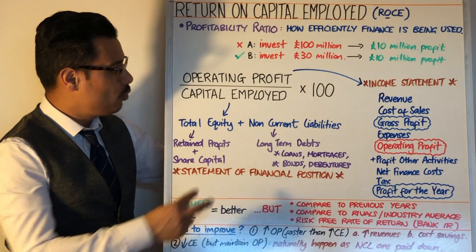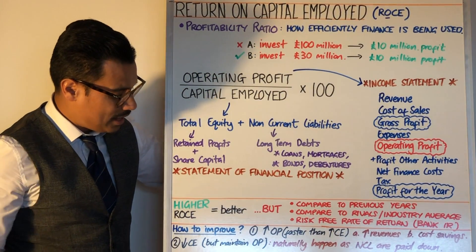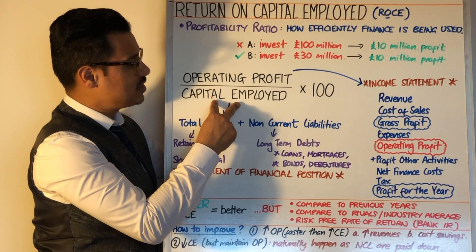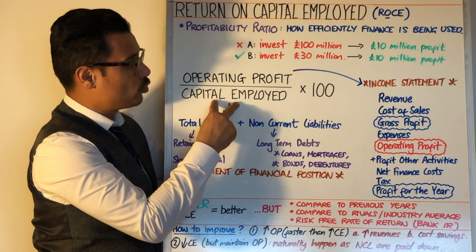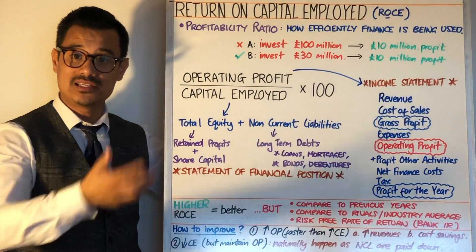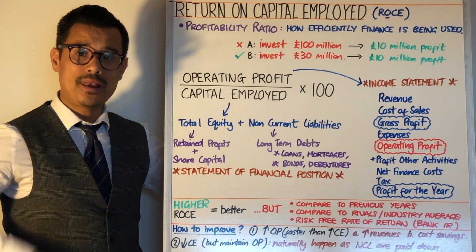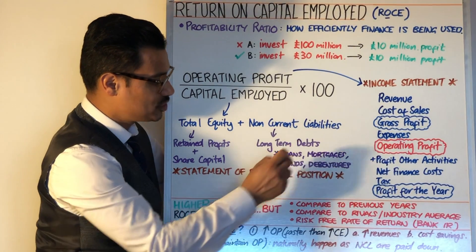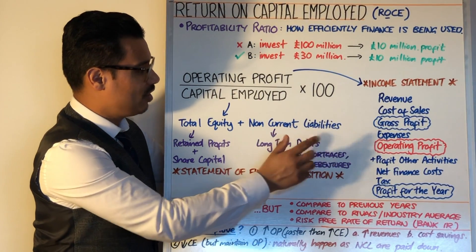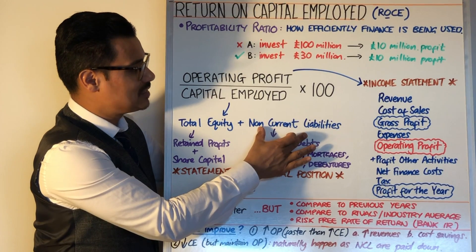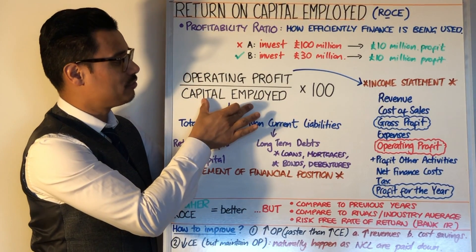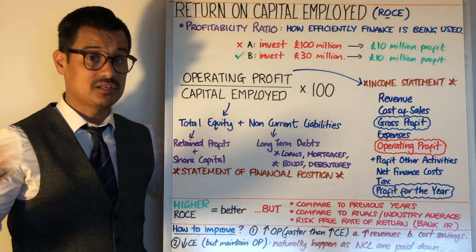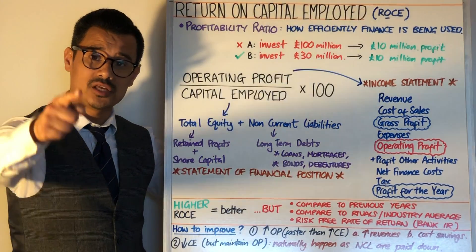On the other side, you might want to concentrate on the capital employed number. If you maintain your operating profit but decrease your capital employed, that will allow your ROCE to increase. Naturally, this happens over the long term as you pay off long-term debts — loans, mortgages, bonds, debentures. As they're paid off, the non-current liabilities number becomes smaller, the capital employed number becomes smaller, and therefore your overall ROCE will gradually increase over time, assuming you don't take on more debt.